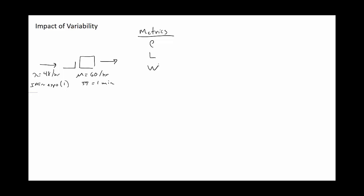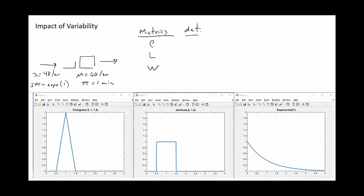We're going to consider four different options for our service time distribution. The first is deterministic — every single entity takes exactly one minute to process. The second is the triangular distribution, with a lower bound of 0.5, upper bound of 1.5, and mode at 1 — a symmetrical triangular distribution.